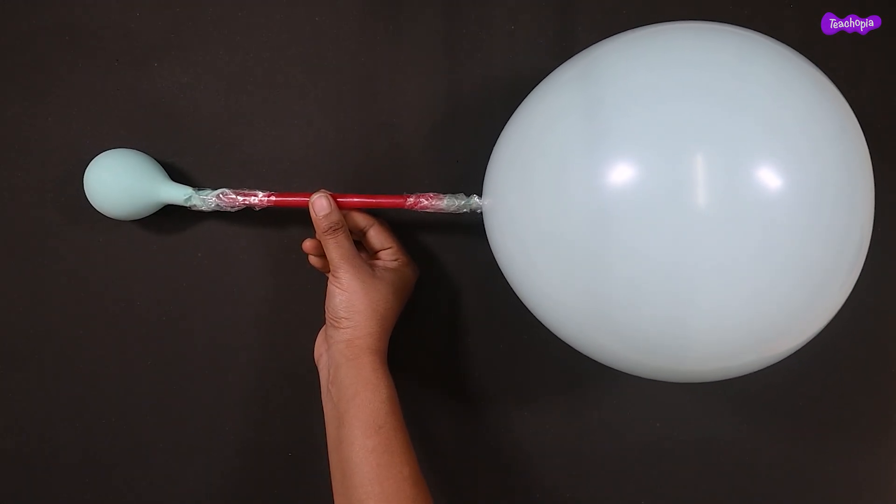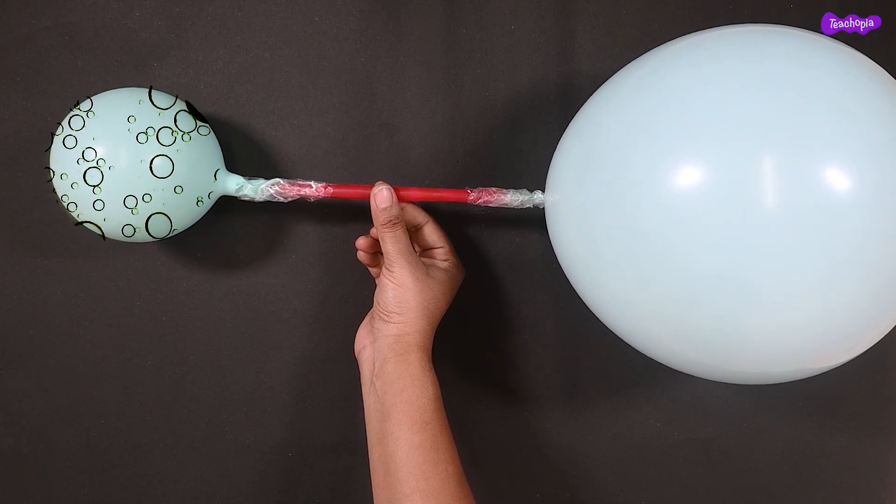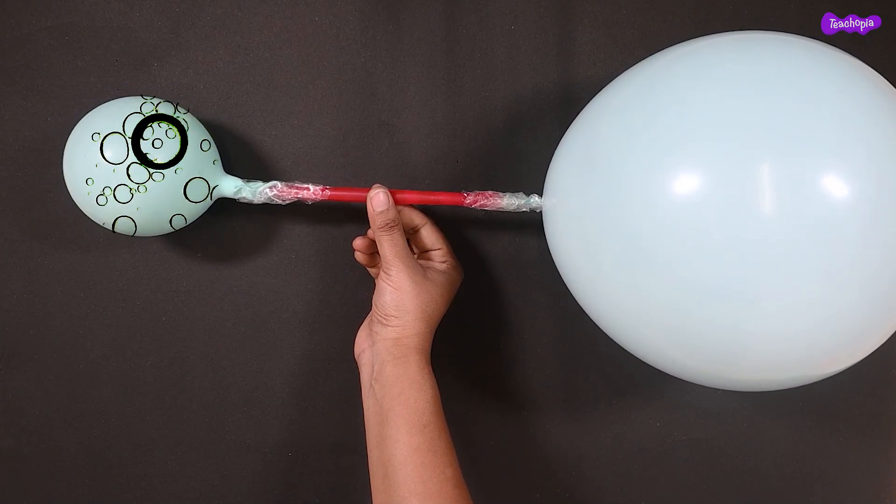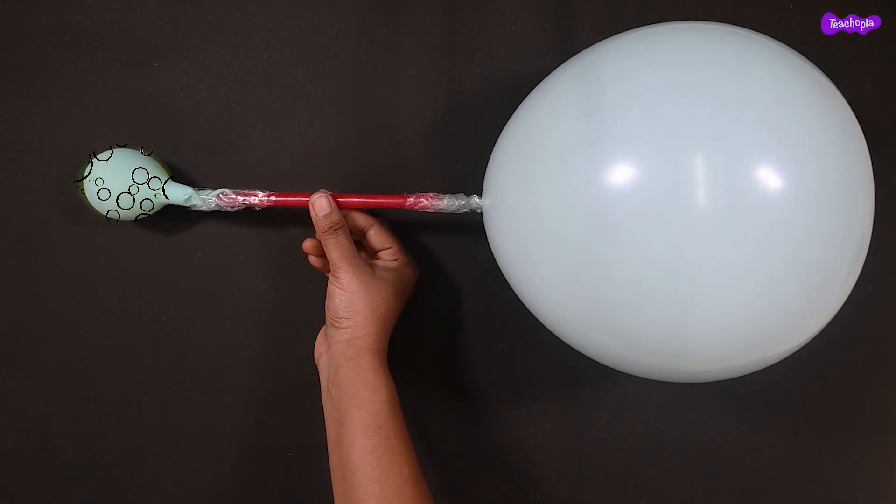What could be the reason for this? In the small balloon, air molecules are closer to each other. Hence, the pressure inside the small balloon is greater compared to the big balloon.